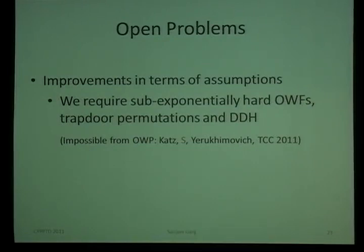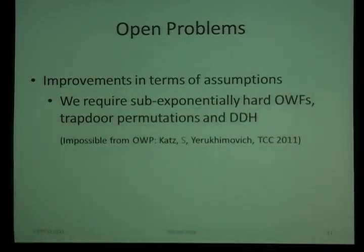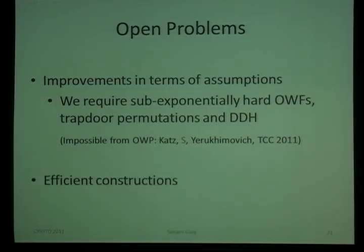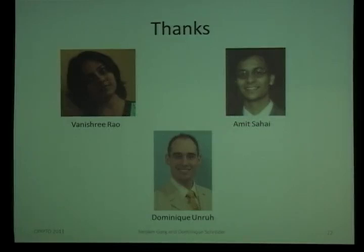Let me conclude with some notes on open problems. Our construction requires strong assumptions, and it would be good to improve them. We specifically rely on sub-exponentially hard one-way functions, trapdoor permutations for the construction of NIZKs in the protocol, and the DDH assumption for the OT protocol. An impossibility result by Katz, Schröder, and Neum in TCC 2012 argues that trapdoor permutations are necessary for the construction. Finally, our construction is only a feasibility result — it would be really nice to construct efficient schemes useful in practice that can be done in two rounds.